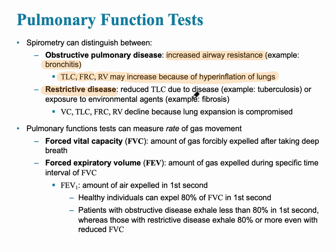A restrictive disease could also occur — a reduction in total lung capacity due to a disease like tuberculosis or fibrosis. Fibrosis could occur from exposure to asbestos, or from a decreased lung capacity of the thoracic cage.